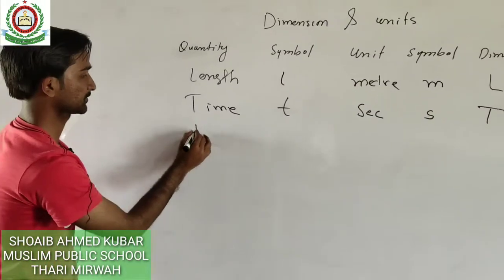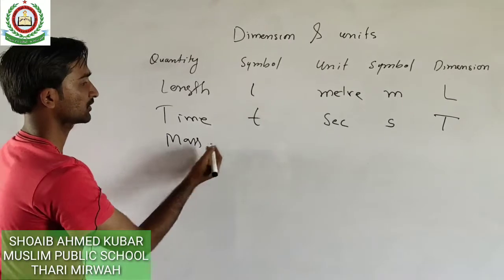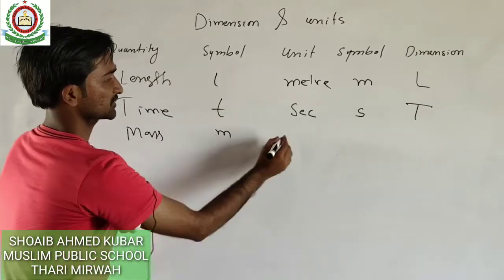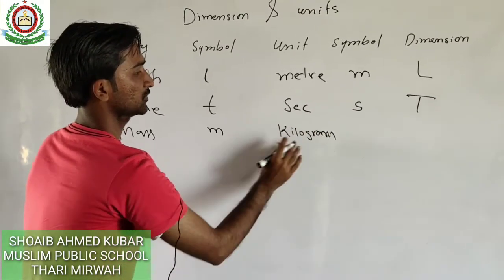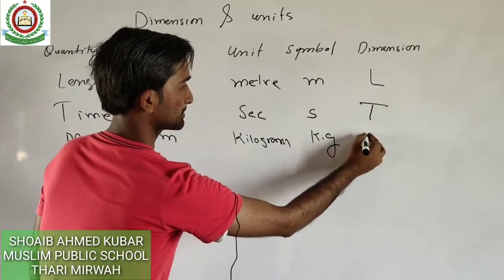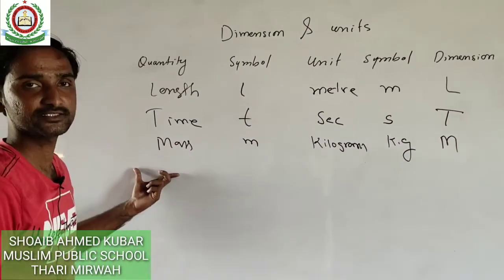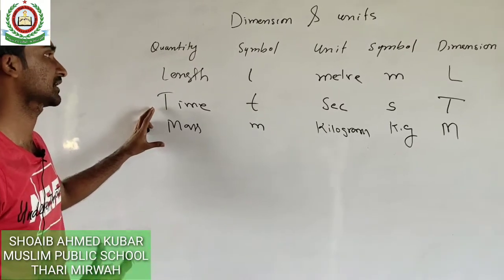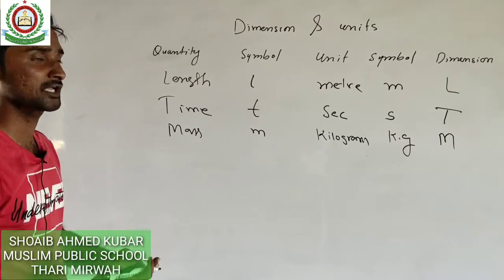Then we have the quantity mass. The symbol for mass is small m, we measure mass in kilogram, the symbol for kilogram is kg, and the dimension for mass is capital M. These are the three basic quantities that frequently come up in our interactions.